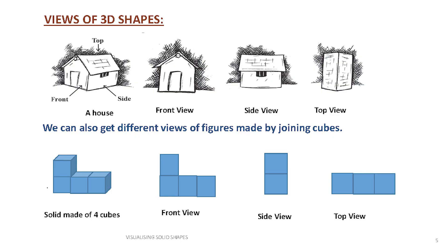Let's take one example. I have a house on the screen. A house looks different from the front, from the side, and from the top. These are the three views of this house: the front view, the side view, and the top view.